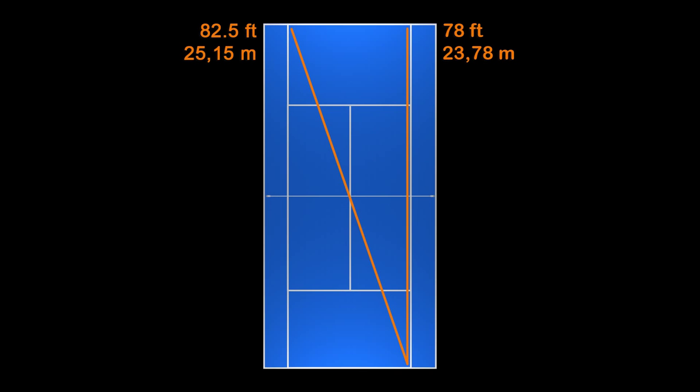The next reason why hitting cross court is usually safer is that the distance for a cross court shot is longer. The cross court shot is about 82.5 feet from baseline to baseline, compared to 78 feet for a down the line shot. This means you have less time to recover to your optimal position after a down the line shot because the ball is in the air for a shorter period of time, and that again makes it safer to go cross court.